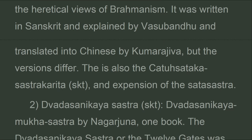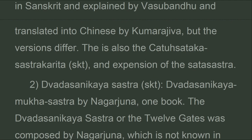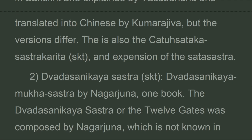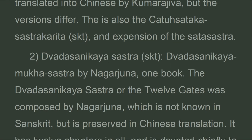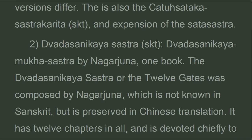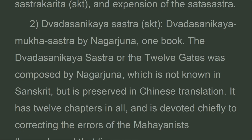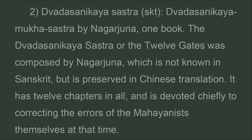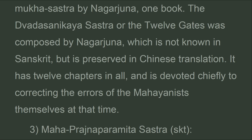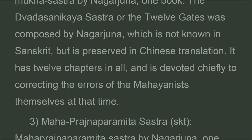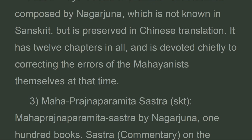There is also the Satasataka Sastra (Skt.), an expansion of the Sata Sastra. Second, the Dvadasanikaya Mukha Sastra (Skt.), by Nagarjuna, in one book. The Dvadasanikaya Sastra, or the Twelve Gates, was composed by Nagarjuna. It is not known in Sanskrit but is preserved in Chinese translation. It has 12 chapters and is devoted chiefly to correcting the errors of the Mahayanists themselves at that time.